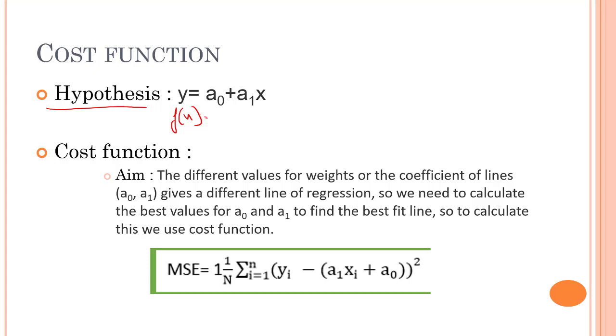So to calculate that, we use our cost function. For each and every point, we will be having different sorts of lines. And for that, we will be having a constant value of a0 and a1. We need the value of a0 and a1 in a way that the answer of this should be quite equal to y.